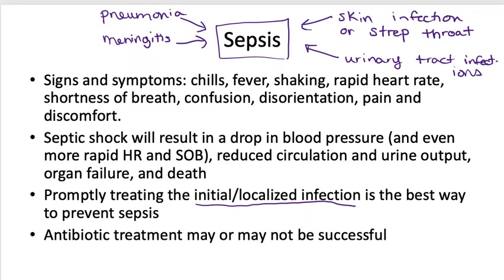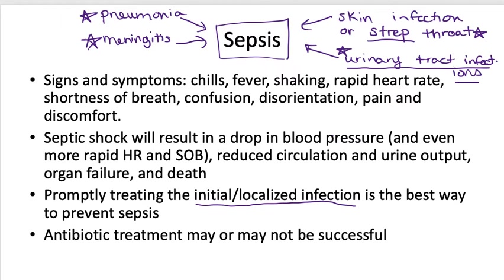Urinary tract infections, if left untreated, can also cause sepsis. The number one way to prevent sepsis is by treating these infections. Strep throat is always going to be bacterial since streptococcus refers to strep, though there are some cases of viral pharyngitis. Urinary tract infections are always caused by bacteria, as we'll see next week. If you have a bacterial infection, it's very necessary to get it treated — usually through antibiotics — so it doesn't result in sepsis.